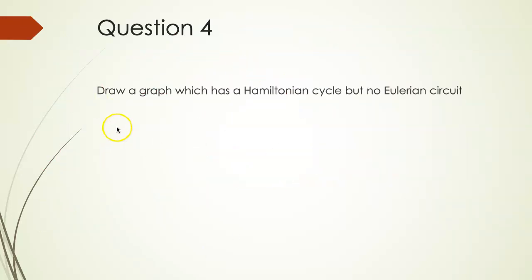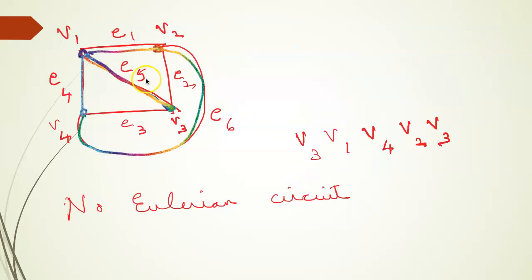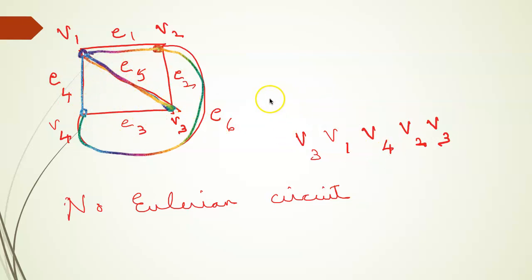Next question: draw a graph which has a Hamiltonian cycle but no Eulerian circuit. Given this graph, the Hamiltonian cycle is: v3, v1, v4, v2, and back to v3. This cycle covers all the vertices of the graph, so it is a Hamiltonian cycle. However, we cannot find a circuit which covers all the edges of the graph without repeating an edge, so there is no Eulerian circuit.